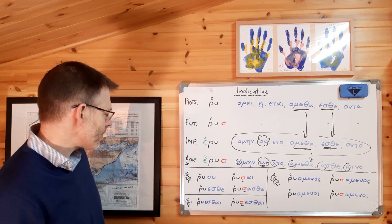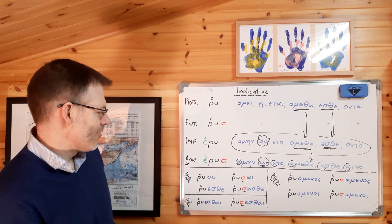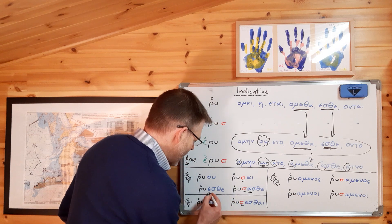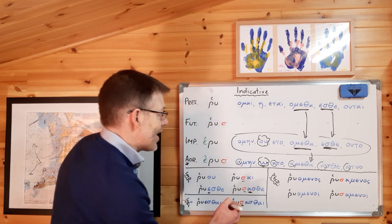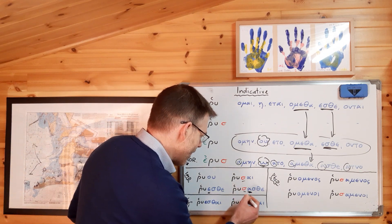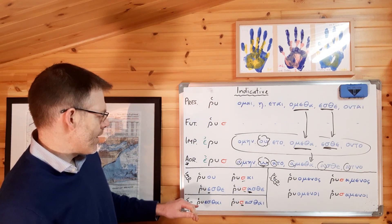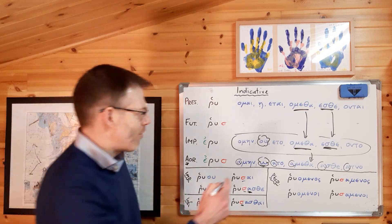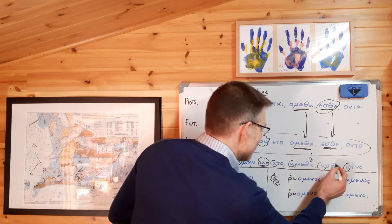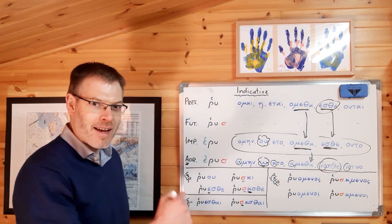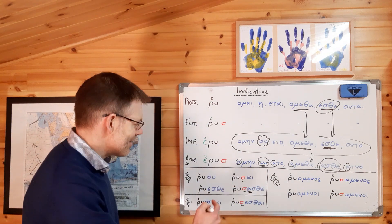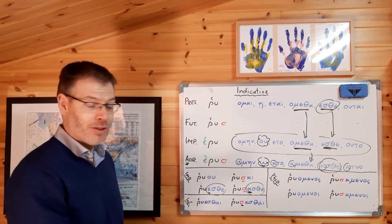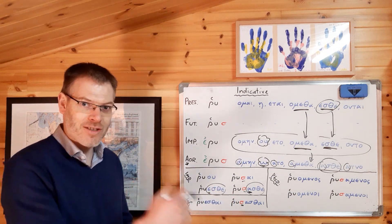So for the imperatives: ruou, ruesthe, rusai, rusasthe. Notice that -esthe goes to -sasthe in the second person plural aorist imperative. You've also probably spotted that the second person plural indicative has the same ending as the second person plural imperative — again, just the same as in luo. So you're starting to see the patterns you've already become aware of making sense here.